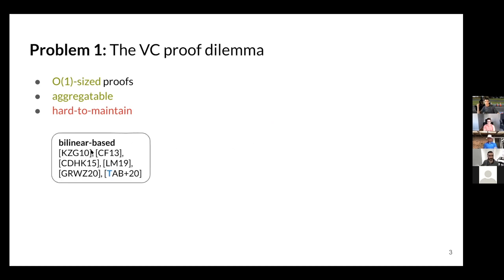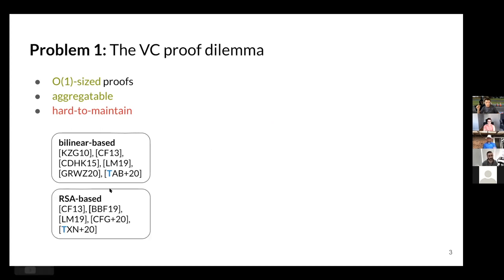Examples of these constructions include KZG-based commitments, RSA-based commitments by Catalano and Fiore (CF-13, which has both bilinear and RSA variants), BBF VCs from accumulators, the enhancement by Campanelli et al. of the RSA work, and the R work which turns a VC into a dictionary. There's also the point proofs construction by Sergei and others. All of these have constant-size proofs that are aggregatable but are difficult to maintain after an update.